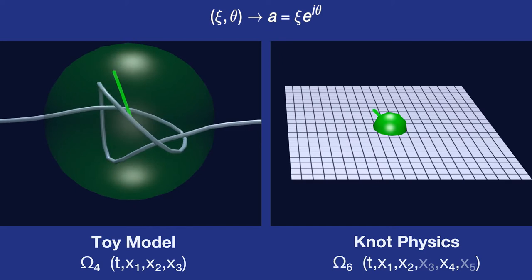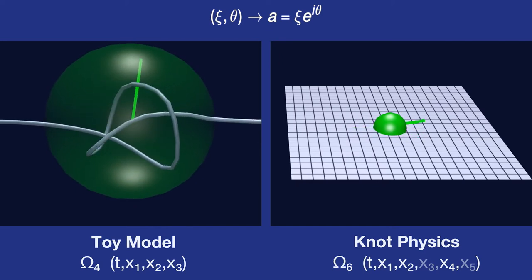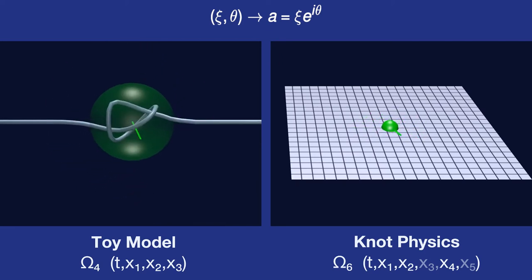Then we can use this knot amplitude, a, to represent the size and rotation of the knot.